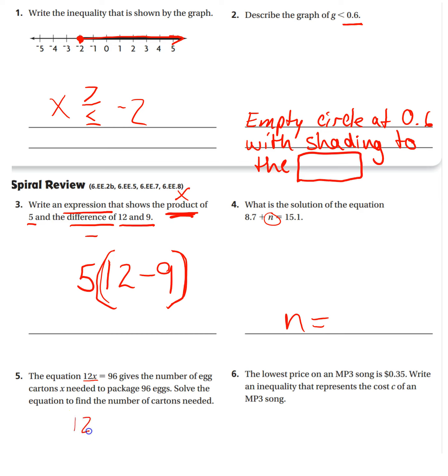So we have 12 times x equals 96. To get x by itself you have to do the inverse operation or the opposite, this is multiplication, so the opposite would be to divide both sides by 12, and that will tell you what x equals.